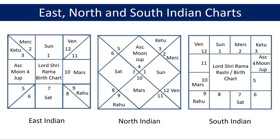There are three variations of this chart in Vedic astrology, as I'm showing you on the screen. The one on the left hand side is called the East Indian chart, the one in the middle is called the North Indian chart, and the one on the right hand side is called the South Indian chart. They all represent the same information but it is presented slightly differently.